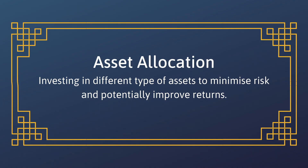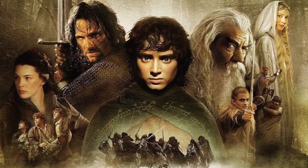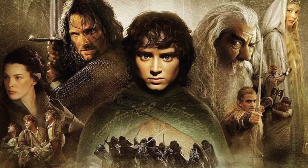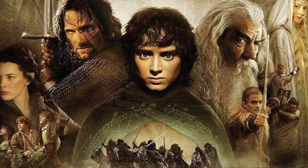Today I'm going to be talking about this thing called asset allocation. It might sound a little technical, a little scary, but I'm going to use a very simple metaphor. If you've ever heard of Lord of the Rings, they're really trying to get that one ring to Mount Doom. And in that journey, they had to rely on help from all these different races.